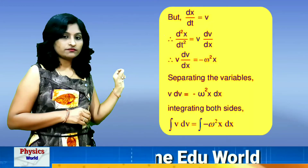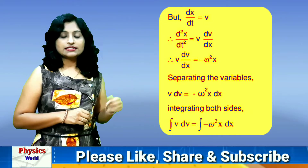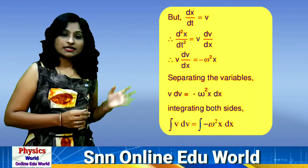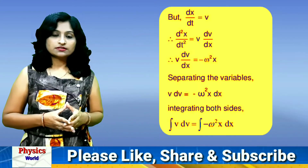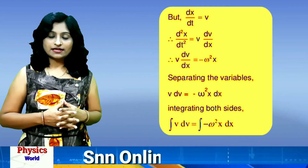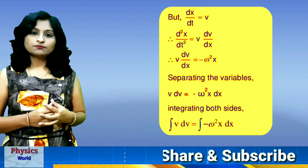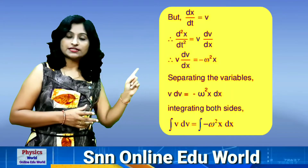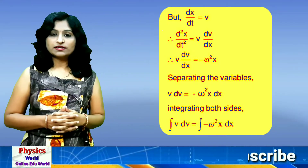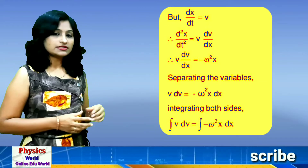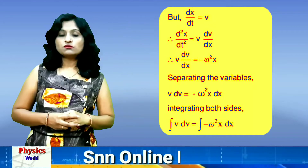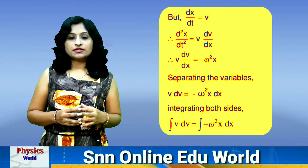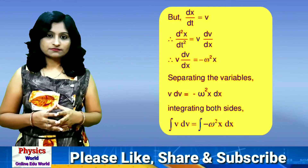We have written v·dv/dx on the LHS, equals -ω²x on the RHS. Now, separate the variables: v and dv remain on the LHS, and we shift dx to the right-hand side with -ω²x. So the equation becomes: v·dv = -ω²x·dx. This is the differential equation, so we integrate it.